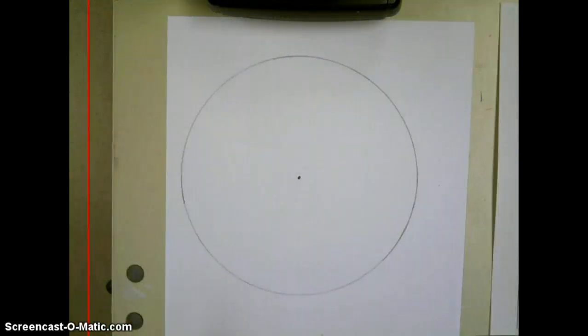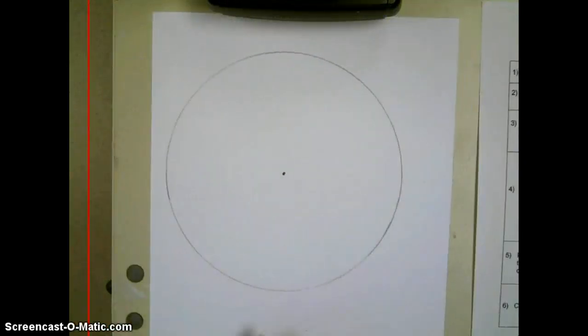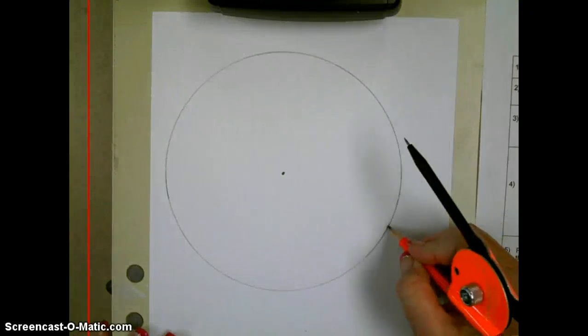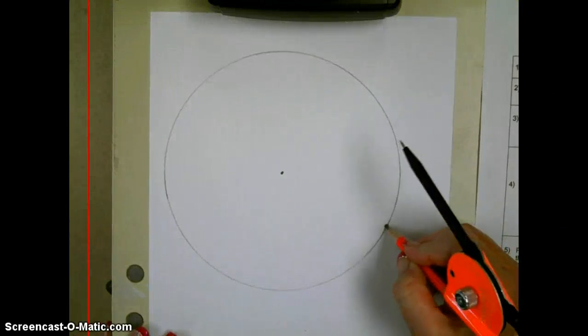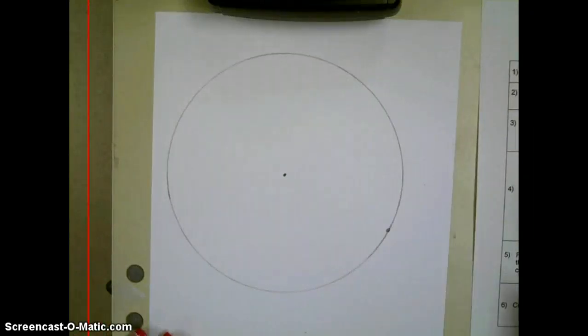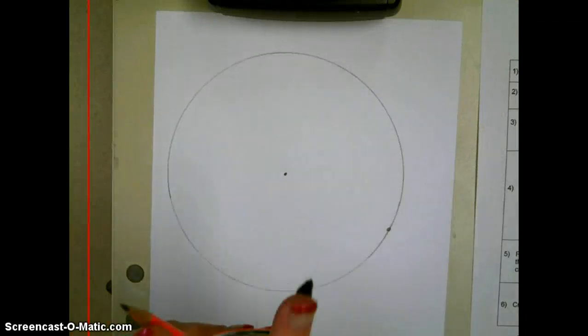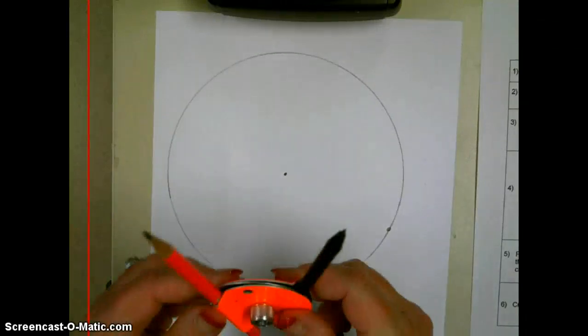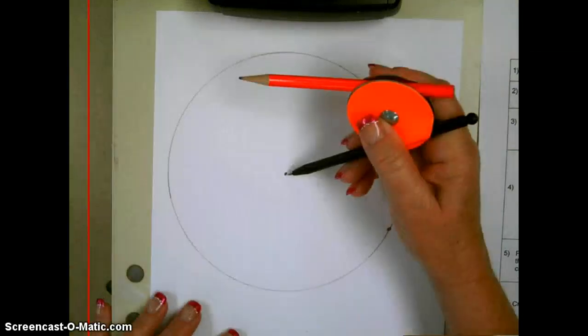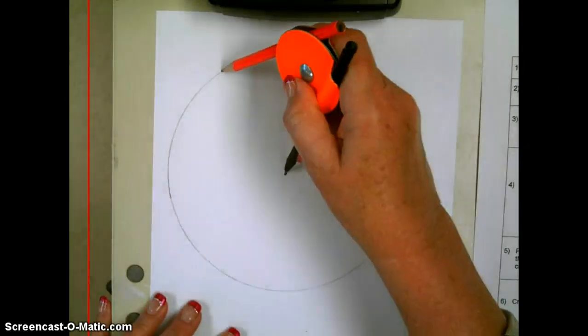Your very next step, you'll see step two on the handout, is to find a random point where you're going to begin the process. From this random point, and it's very important, do not change the radius of the circle. Keep your compass the same radius that you used to create this circle.